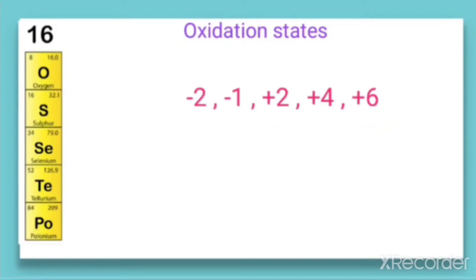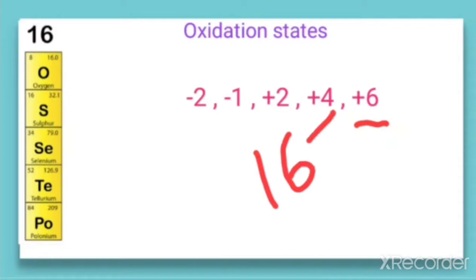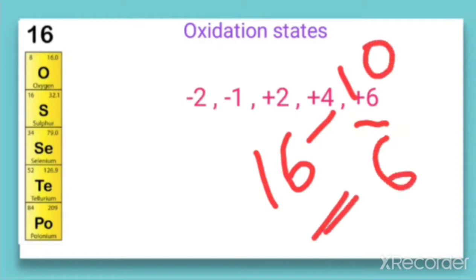The highest oxidation state in these elements is +6, because the group number is 16. So the highest oxidation state can be calculated by 16 minus 10, which is equal to 6. So +6 is the highest oxidation state for these elements.